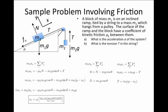a is g times the fraction M2 minus M1 mu k cosine theta plus sine theta divided by M1 plus M2.